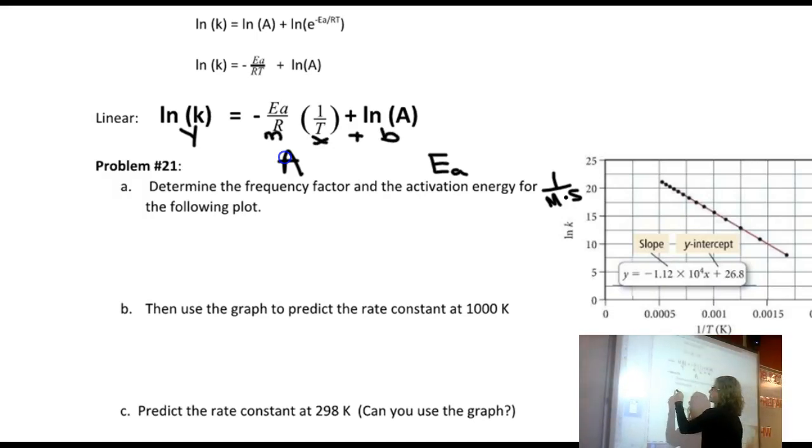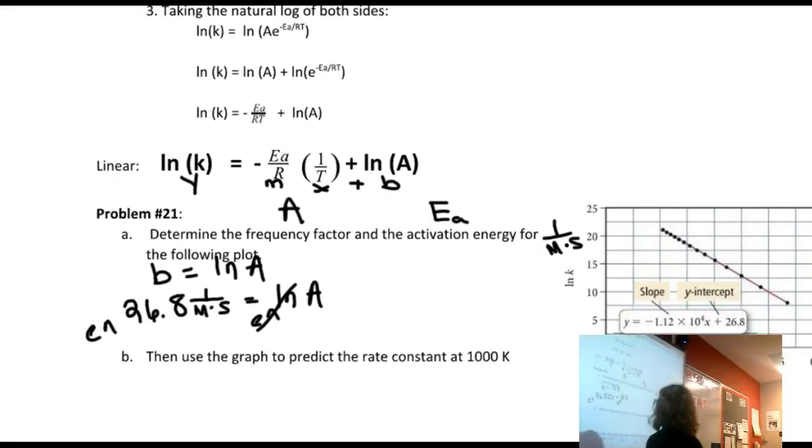b is equal to the natural log of A. Well, I know the y-intercept is 26.8. It's given to me in that equation. And that's in units of 1 over molarity times seconds. And then I have the natural log of A. Well, then I want to get rid of the natural log. e to that cancels those out. This is going to end up a really large number. And so then I get A being equal to 4.31 times 10 to the 11th power. The units are just the same, 1 over molarity times seconds.